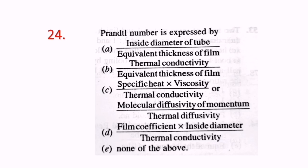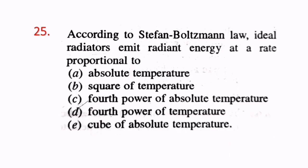Question 24: Prandtl number is expressed as specific heat multiplied by viscosity divided by thermal conductivity, or molecular diffusivity of momentum divided by thermal diffusivity. C is the correct answer. Question 25: According to the Stefan-Boltzmann law, ideal radiators emit radiant energy at a rate proportional to the fourth power of absolute temperature, T⁴. C is the correct answer.